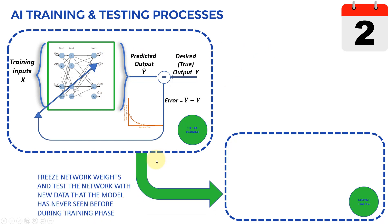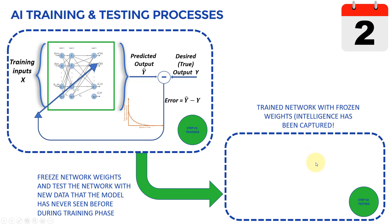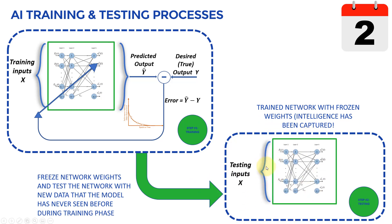Once the model is trained, we freeze all the network weights. Then we test the intelligence using brand new data the model has never seen before during training. This is very important: the brain is frozen — all these weights and connections have been optimized. Now we can assess performance by feeding the testing data into the model and generating predictions. That's the testing phase.